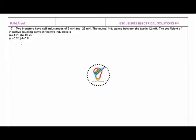The next question on the screen is: two inductors having self inductance of L1 equals 9 millihenry and L2 equals 25 millihenry. The mutual inductance between these two is also given, M is 12 millihenry. The coefficient of coupling between the two inductors is?